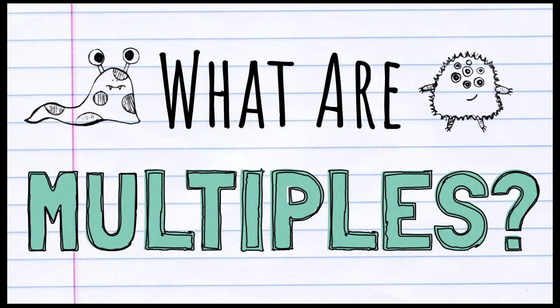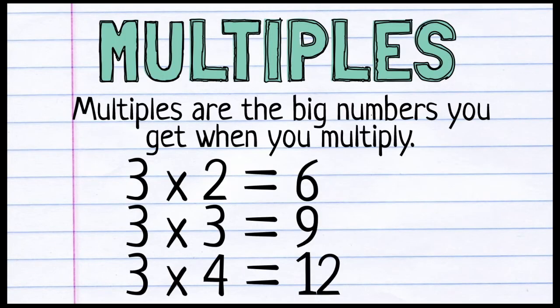What are multiples? Multiples are the big numbers you get when you multiply. So here we see 3 times 2 equals 6, 3 times 3 equals 9, 3 times 4 equals 12.